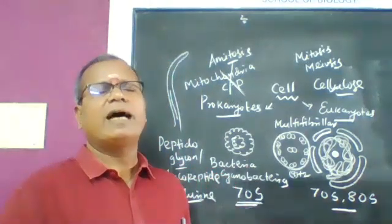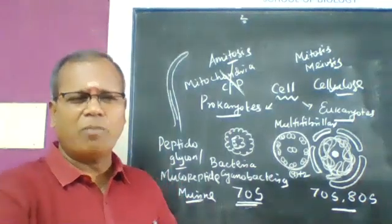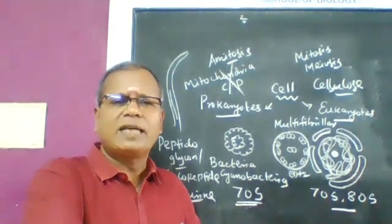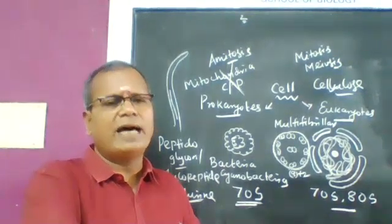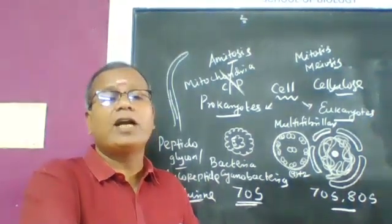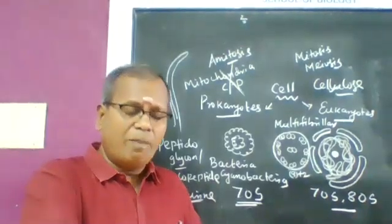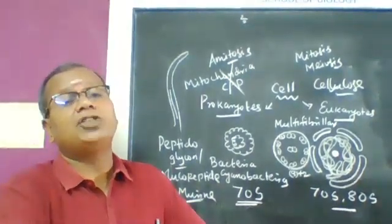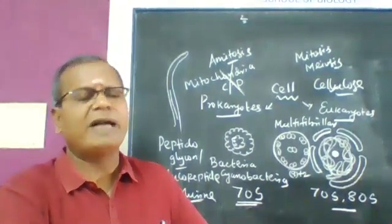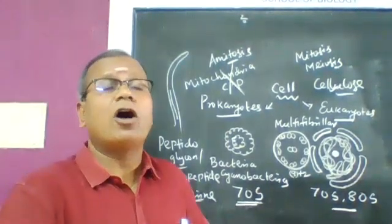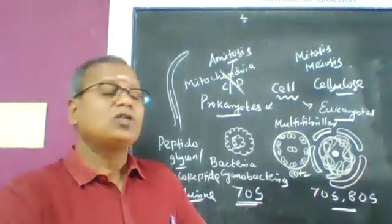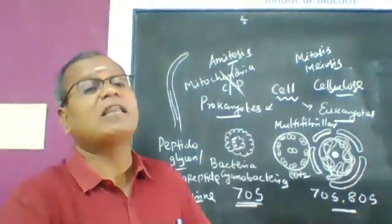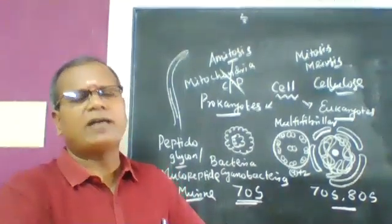In the Five Kingdom Classification: unicellular prokaryotic organisms come under Monera; unicellular eukaryotic organisms come under Protista; multicellular eukaryotic heterotrophic organisms come under Fungi; multicellular eukaryotic autotrophic organisms come under Plantae; and finally, Animalia includes heterotrophic eukaryotic organisms without cell walls.